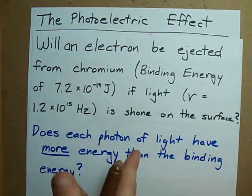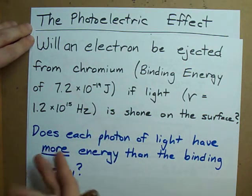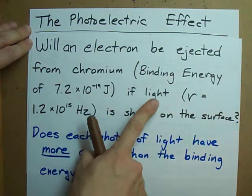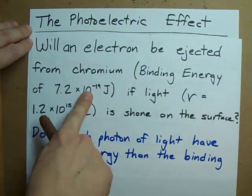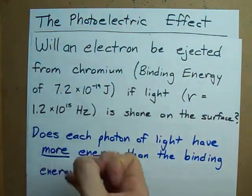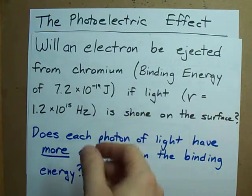Now what they're really asking here is does each photon of light have more energy than the binding energy? If the photon has more energy than this, electrons will be ejected because each photon excites the electrons so much they can't help themselves and they get sprayed out of the metal.